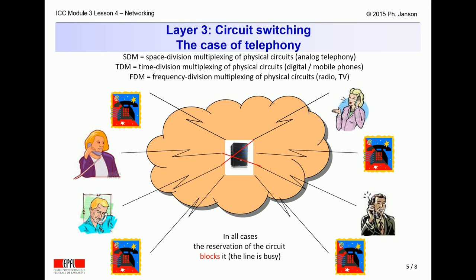In modern telephone networks, physical wires or wireless connections are multiplexed over time between several conversations, which is called time division multiplexing. Something similar happens in radio and TV broadcasting, all being not over physical circuits but through the air or antenna cables. The radio and TV signals of several senders are broadcast simultaneously but in different frequency bands, which is called frequency division multiplexing. But in all cases, whether space, time, or frequency division, the established circuit builds one connection, which is busy for the entire duration of the conversation or the broadcasting time.